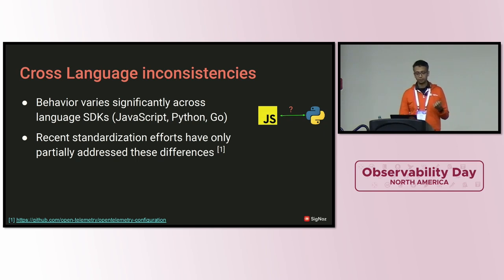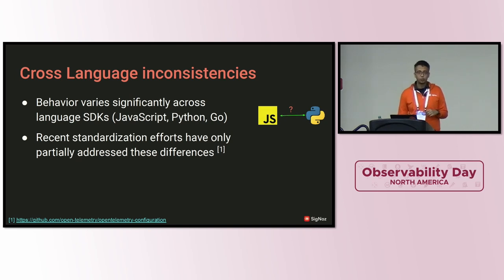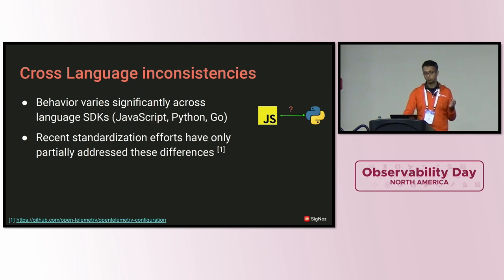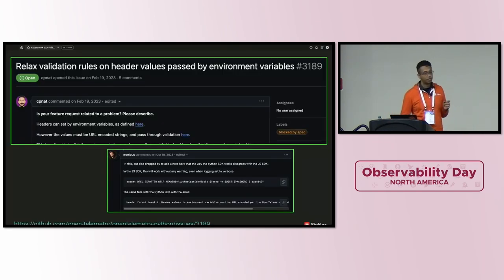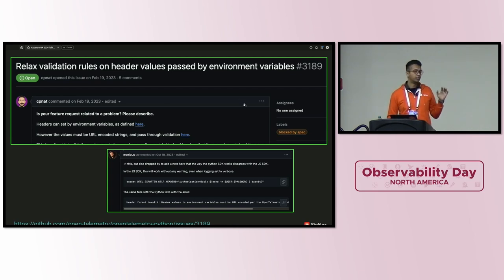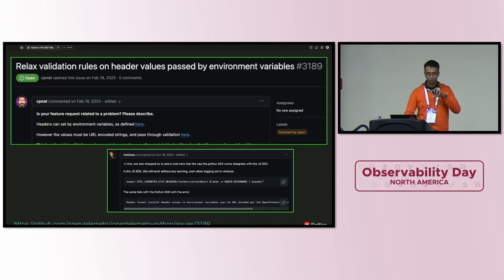There are cross-language inconsistencies — behavior in one language is very different from another. There are some efforts going on to address these differences; we saw today the OpenTelemetry configuration working group presented and that's a great step in the right direction. But there's still a lot of difference between different applications and languages. For example, somebody trying to pass a Bearer token — the way Node.js and Python handle the space in the authorization token is very different. And currently this is blocked at the spec level because different working groups have different interpretations of how to implement it.